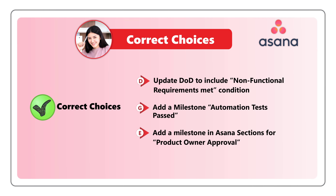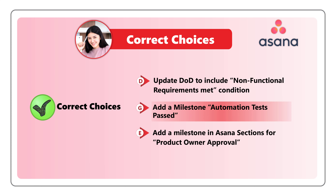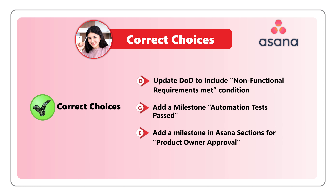Based on everything I shared, I believe the correct answers are: Choice D — Update Definition of Done to Include Non-Functional Requirements Met Condition; Choice G — Add a Requirement, Automation Tests Passed; and Choice E — Add a Milestone in Asana Sections for Product Owner Approval. Do you have a better way to solve this question? Please post your answers and rationale in the comments so we can all learn.